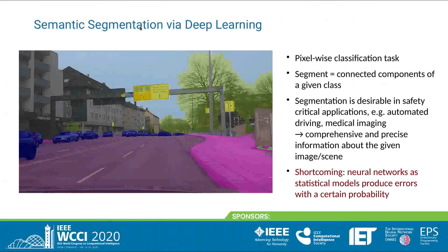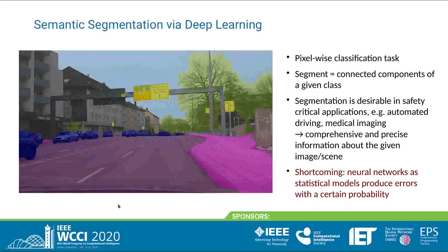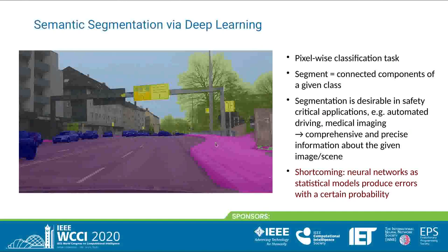The application we deal with is Semantic Segmentation, and in recent years deep learning has shown outstanding performance in predicting such semantic segmentations. Here is an example image of a semantic segmentation, which can be viewed as a pixel-wise classification task. After obtaining a class for each pixel, we add a coloring scheme — for example, the sidewalk pink and the trees green — and we call each connected component of a given class a segment.